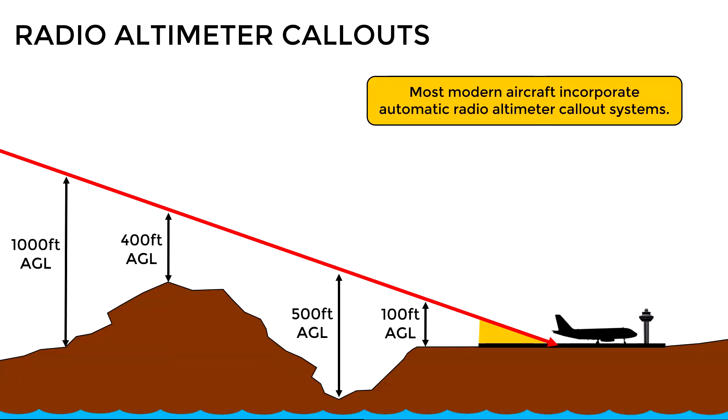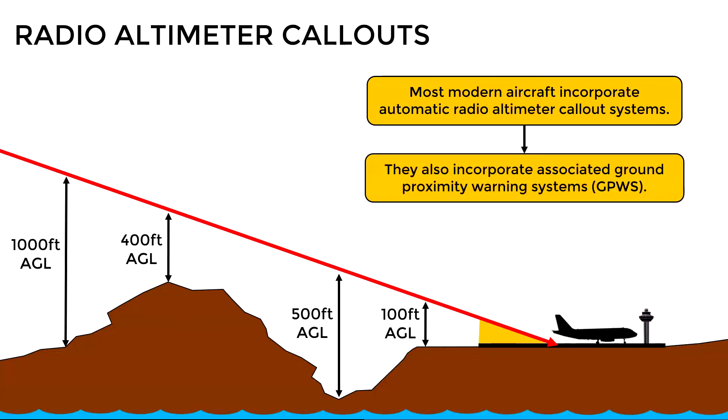Besides this, some aircraft also incorporate ground proximity warning systems which depend in part on the indications of the radio altimeter, giving callouts like these: 'too low flaps, too low gear, too low terrain, terrain, terrain, pull up.' However we will not go into detail with this.